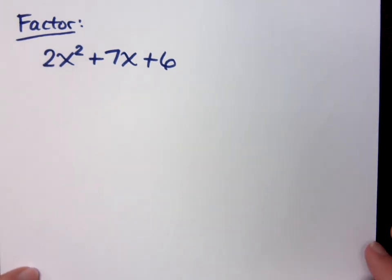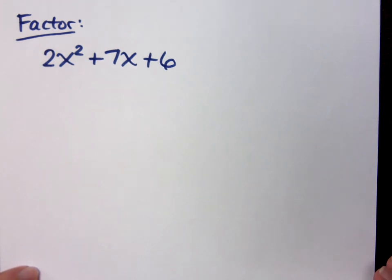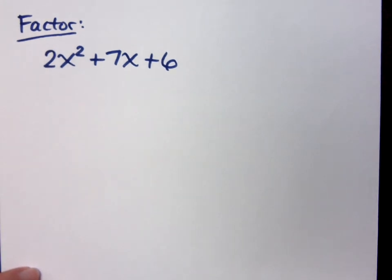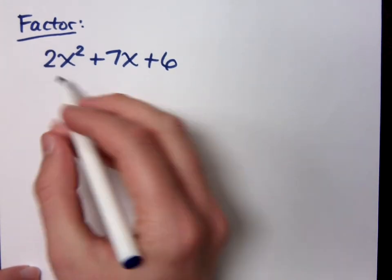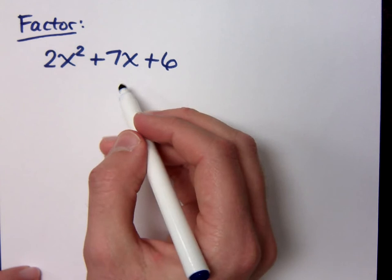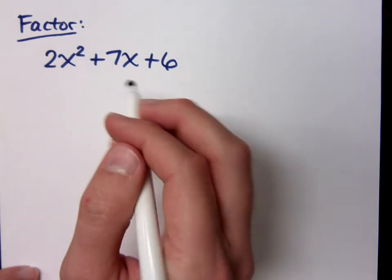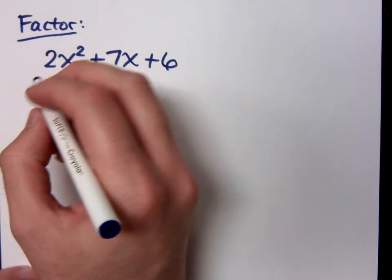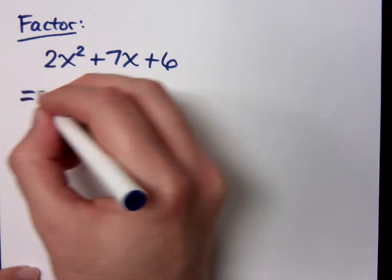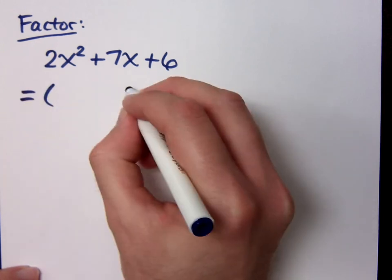You first gotta look for a GCF, right? There's no common factor other than 1 — I don't really want to worry about a common factor right now. What I will worry about is how this guy breaks down. It's a trinomial.